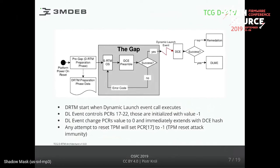On success, we have a dynamically launched measured environment. We run some kernel or other software and we can check the PCRs that everything was dynamically measured. Or we have some remediation if this didn't succeed. This dynamic launch event uses PCR 17 to 22. Those are initialized with minus one, and during the event - the execution of the instruction - it is changed to zero and immediately extended with the hash of our DCE, which for AMD is our secure loader, which is measured and extends PCR 17.